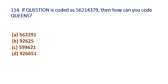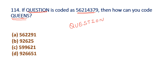Question 114: If 'QUESTION' is coded as 5 6 2 1 4 3 7 9, then how can you code 'QUEENS'? QUESTION is coded Q=5, E=6, U=2, S=1, T=4, I=3, O=7, N=9.